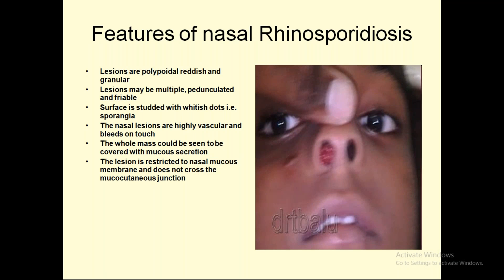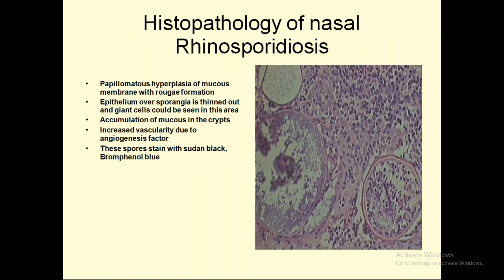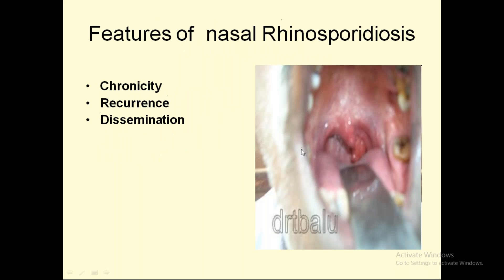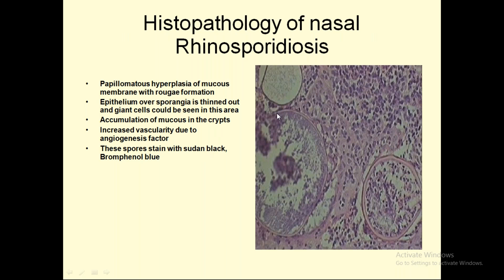Features of nasal rhinosporidiosis: lesions are polypoidal, lobulated, and granular; may be multiple, pedunculated, and friable. The surface is studded with whitish dots representing sporangia. The lesion is highly vascular and bleeds on touch. The whole mass may be covered with mucous secretion. The lesion is restricted to nasal mucous membrane and does not cross the mucocutaneous junction. Histopathology shows papillomatous hyperplasia of mucous membrane with roof formation, thinned epithelium over sporangia, giant cells, mucous accumulation, increased vascularity due to angiogenesis factor, and spores stained with Sudan black and bromophenol blue.